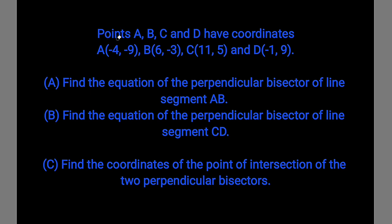The question reads: points A, B, C, and D have coordinates negative 4, negative 9; 6, negative 3; 11, 5; negative 1, 9, respectively. We have three questions here. The first one reads: find the equation of the perpendicular bisector of the line segment AB. The second question reads: find the equation of the perpendicular bisector of the line segment CD. And the last question reads: find the coordinates of the point of intersection of the two perpendicular bisectors.